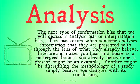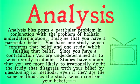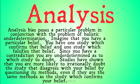The next type of confirmation bias is analysis bias, or interpretation bias. This bias occurs when someone analyzes information through the lens of what they already believe. Interpreting noises in a house as a poltergeist because you already believe one is present is one example. Another might be discrediting the methodology of a study simply because you disagree with its conclusions. Analysis bias poses a particular problem in conjunction with the problem of holistic underdetermination: imagine you have one study which confirms your belief and one which falsifies it. Since you have a contradiction, you are underdetermined as to which study to doubt. Studies have shown you are more likely to irrationally doubt the study that disagrees with your belief by questioning its methods, even if those methods are the same as the confirming study.